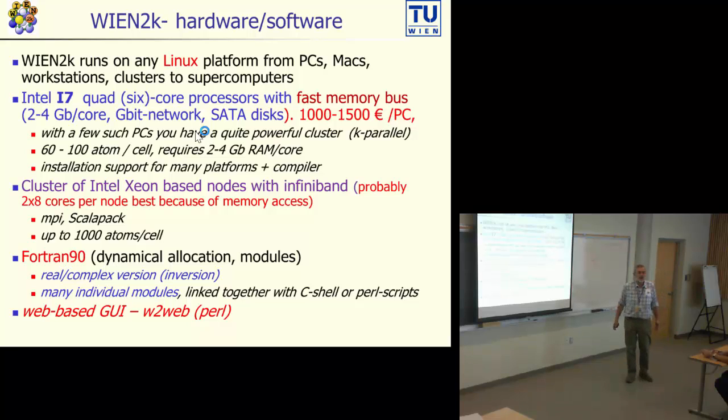If you have more money or want to go to even bigger systems, then you have to go to Intel Xeon-based workstations. You need a cluster of these Intel Xeons with Infiniband network, because gigabit network is too slow. Probably at the moment the best performance you get if you buy 2x8 core Intel Xeon processors, because if you have more cores you may be limited by memory access. Even if you have 32 cores, it will not be faster running 32 processes parallel than 16, because the memory cannot feed the processors enough.